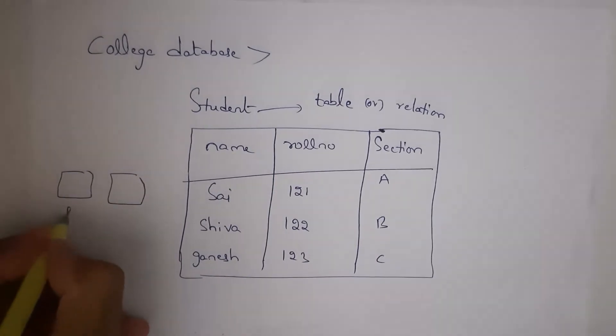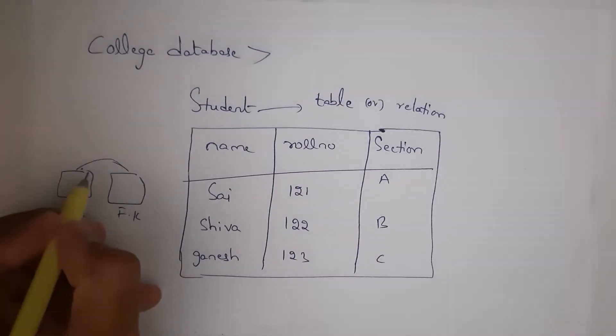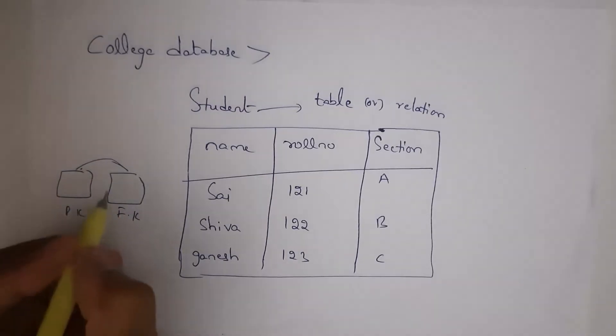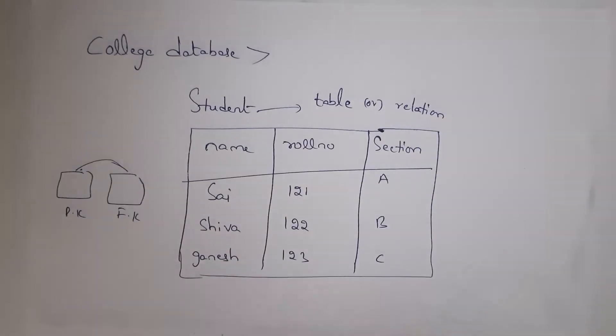For example, if there are two tables, by using primary key and foreign key, I can relate these two tables. That is, I can connect these two tables. That is why we call this table name as relation.